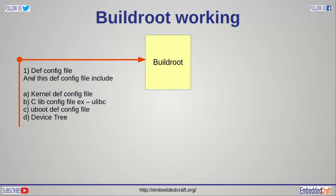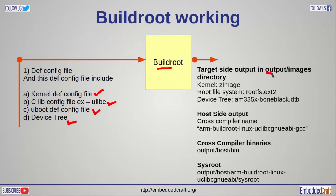Buildroot requires configuration files to work. We have to provide configuration files for kernel, C-library, U-Boot, and device tree. Based on these config files, Buildroot will generate images in the output image directory. The output of Buildroot will be the kernel image which is zImage, the root file system, and device tree binary files — which is am335x-boneblack.dtb.